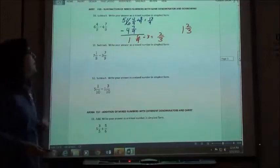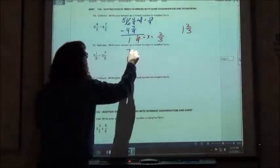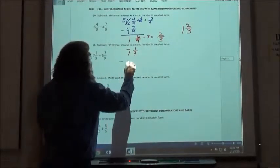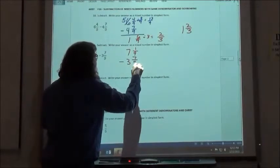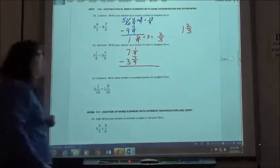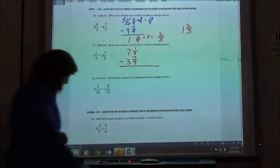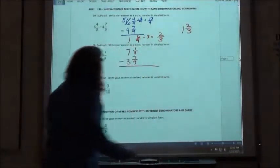So if I look at number 11, I'm going to take 7 and 1 9th, and I'm going to subtract 3 and 7 9ths. Fortunately, my computer wasn't very creative, and I'm in 9ths again.